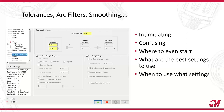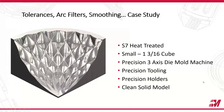We are going to be focusing today really on how this applies to finishing toolpaths, because it's the easiest way that you're going to directly see the variables. We're going to be talking about this case study throughout this entire webinar. This case study we did out of S7 heat-treated steel. It was a pretty small little part using a precision, high-end die mold machine, taking all the extra variables out of the mix — high-end tooling, high-end holders, work holding, and a perfectly clean solid model with no errors within the solid.